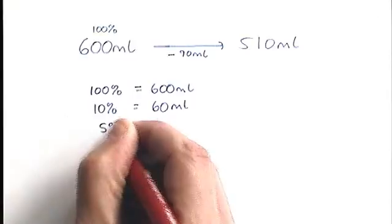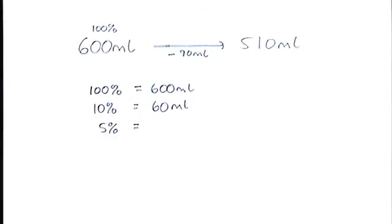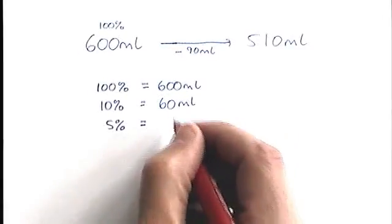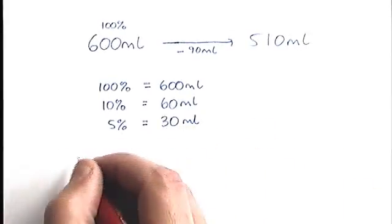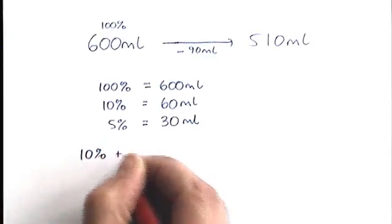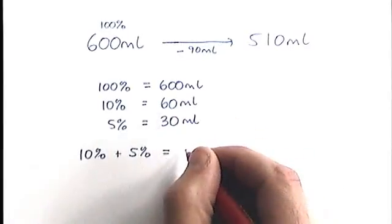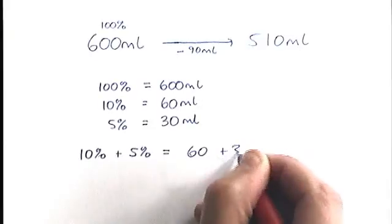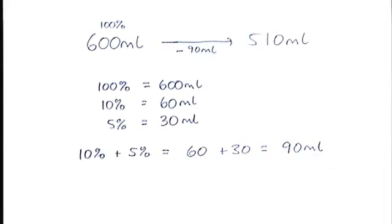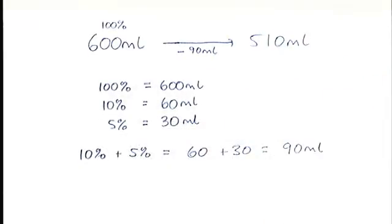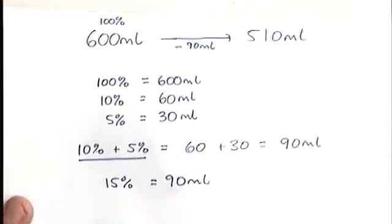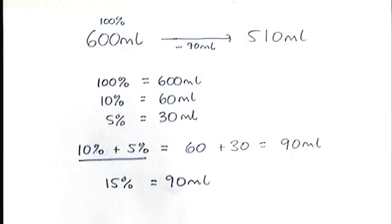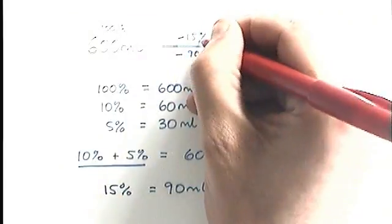So 10% is not quite the percentage that we want. We want to get to 90 milliliters. Let's try 5%. 5% is half of 10%. So I'm going to half this number to make 30 milliliters. Now, look what happens. If I add together my 10% and my 5%, 10% is 60, 5% is 30. I've got 60 plus 30, which is 90 milliliters. And that's what I was aiming for. I can see here this is 15%, which is 90 milliliters. So the amount which has been lost is 15%.